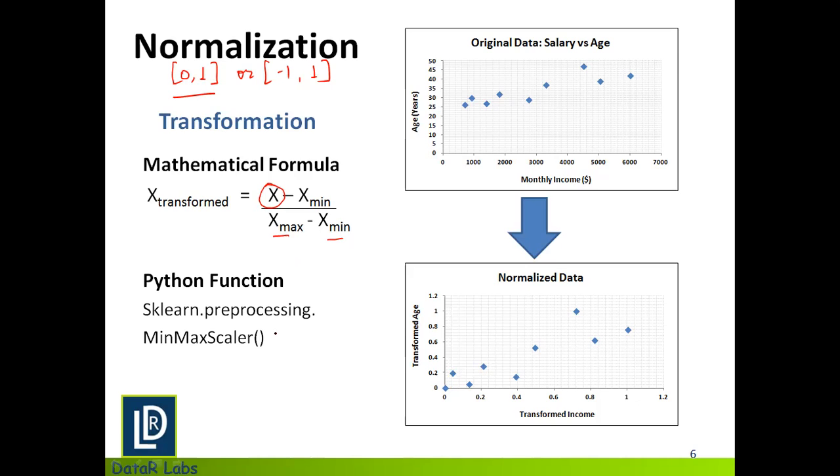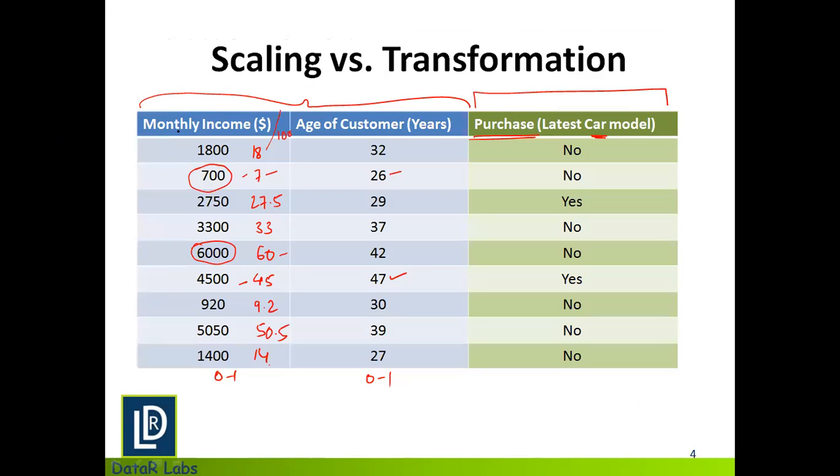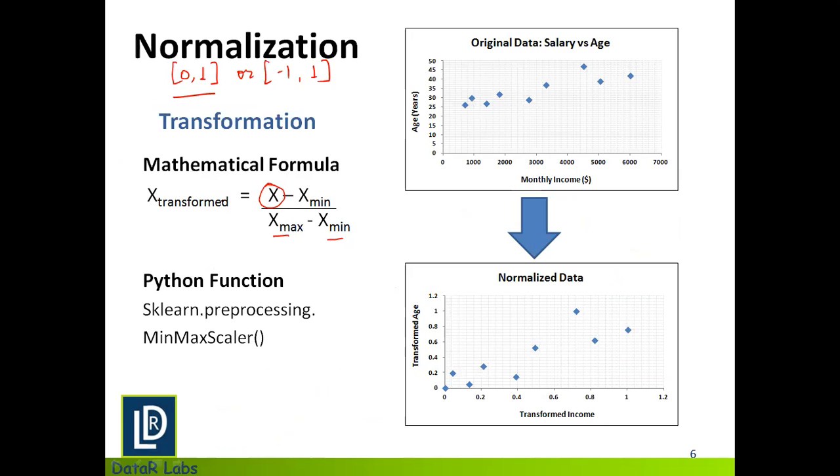So for instance, let me just go back a couple of slides. So if I have to convert monthly income into a transformed variable, which is monthly income transformed, what I'll simply do is I will start applying the formula we just saw on the data feature, which is 700 minus the minimum value, which is 700, and divided by the maximum value, which is 6000 minus the minimum value, which is 700. And this would give me some value within the range of 0 to 1. So using this formula, I convert my data feature into a transformed data feature.